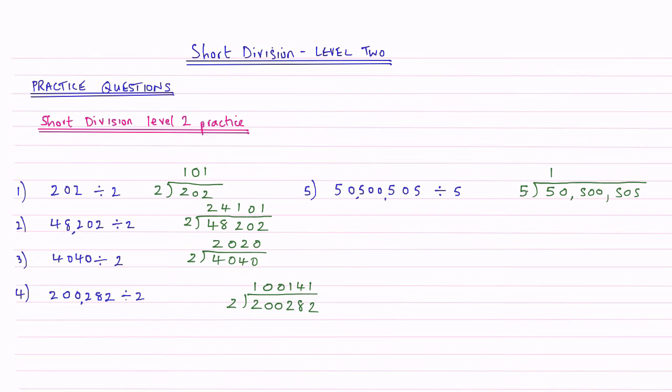5s into 5 go 1. 5s into 0 is nothing. 5s into 5 is 1. Then we've got 0 and a 0. 5s into 5 is 1. 0 and then a 1. So my answer to that one is 10,100,101.